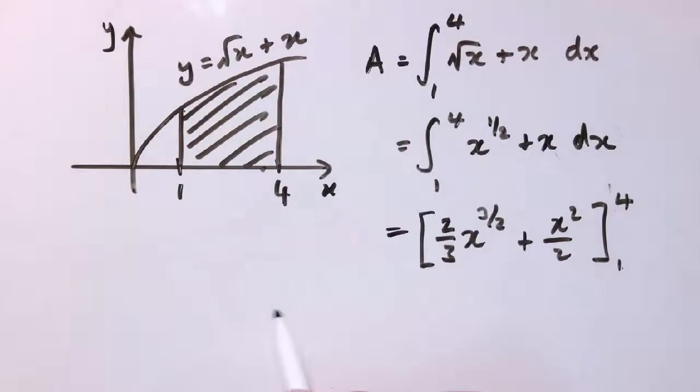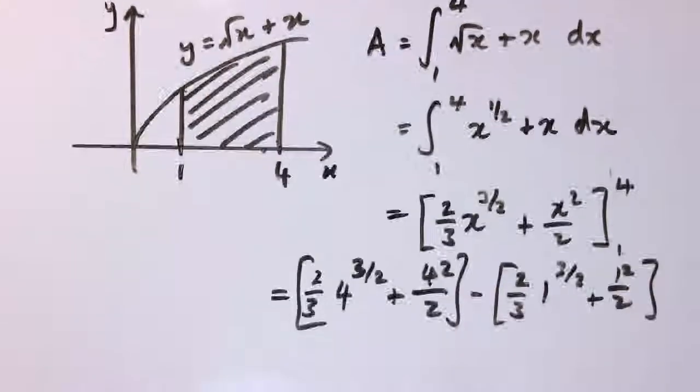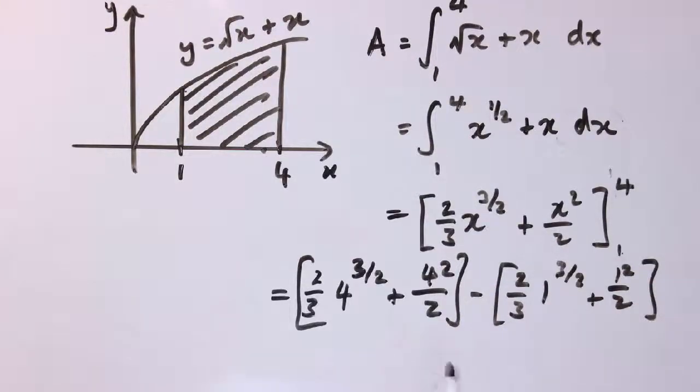And what this notation means is that we substitute in 4 to start off with, so I get 2 thirds times 4 to the 3 over 2 plus 4 squared over 2, and I subtract when I get when I put in 1, so 2 thirds times 1 to the 3 over 2 plus 1 squared over 2. If you can simplify these things down as you go along, you don't need to necessarily write all of these things in, I'm just doing this to show you every step.